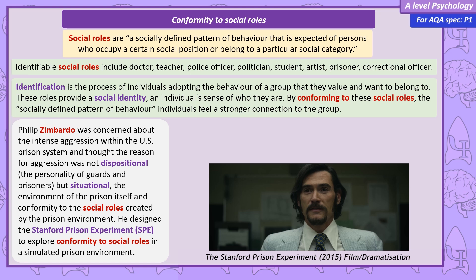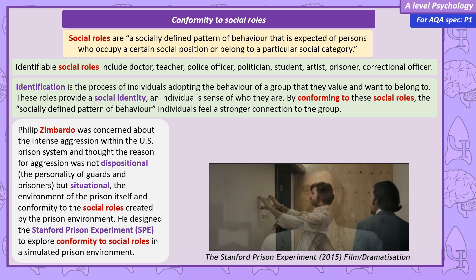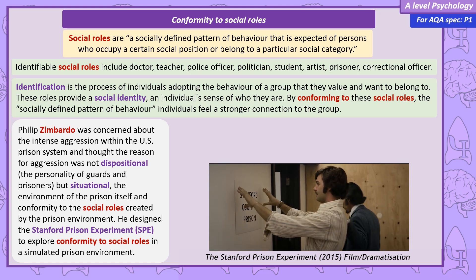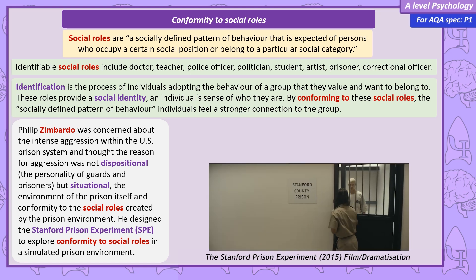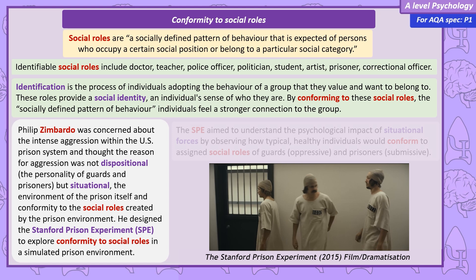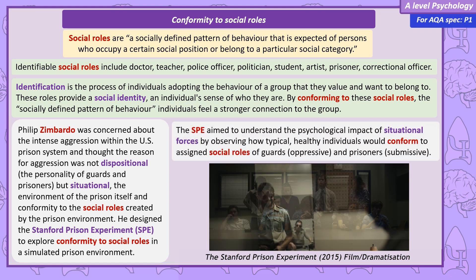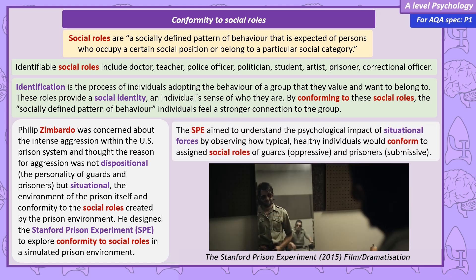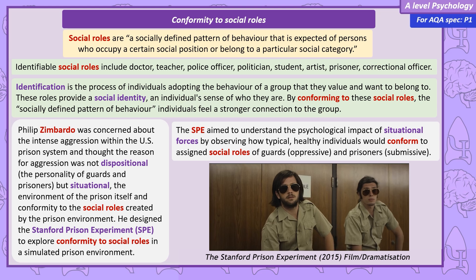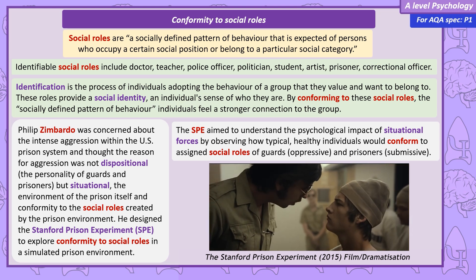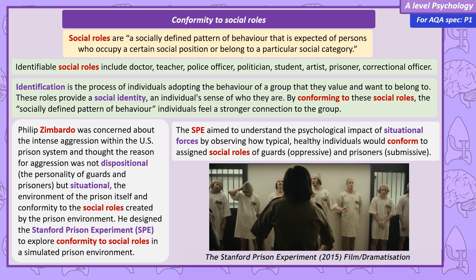In order to study conformity to social roles in a prison setting, Zimbardo created a mock prison in the basement of Stanford University. His aim was to see if typical, mentally healthy people would conform to the social roles of guards — so become aggressive — and the social roles of prisoners — so become submissive. Zimbardo's study is typically referred to as the Stanford Prison Experiment, abbreviated to the SPE.